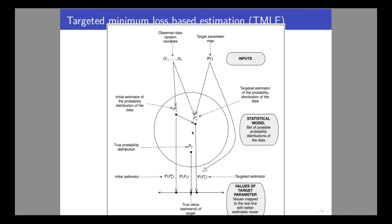Here's a visualization of how TMLE works. We show a sphere representing the statistical model, which contains the true probability distribution P0. You come up with an initial estimate of the density Pn0 — the super learner. Then you create a little path through Pn0, a small parametric model, and do a little update with standard maximum likelihood — called the targeting step. You get Pn star, your targeted estimate of the density, which you then use to evaluate the target feature such as the average treatment effect.